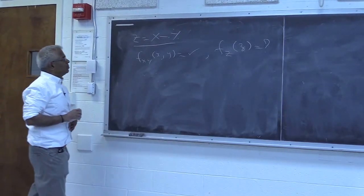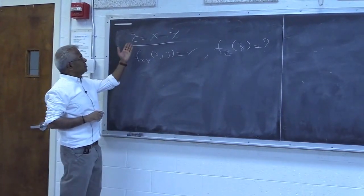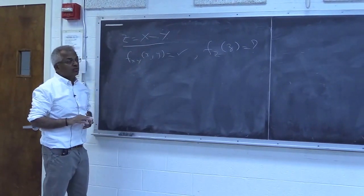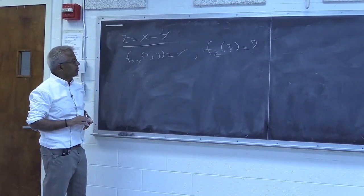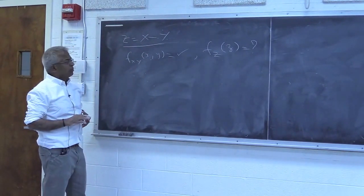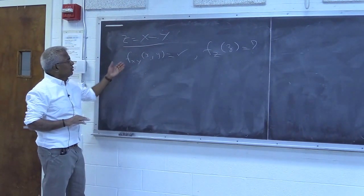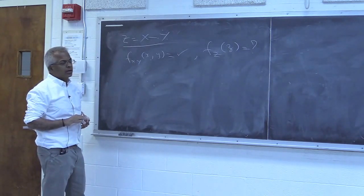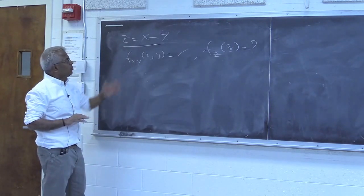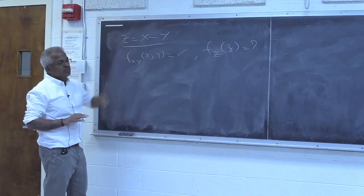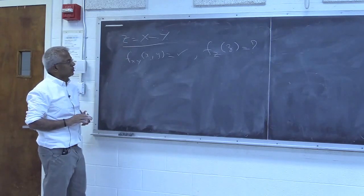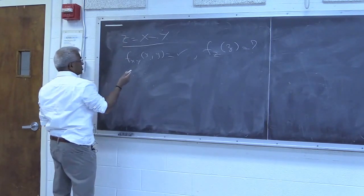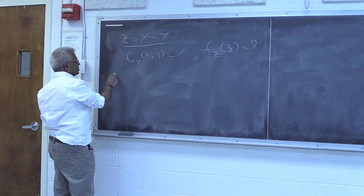Let's look at this problem. This is z = x minus y, the difference of two random variables. These are classic problems. You are given the joint density function of x and y, and we want the density function of z, where z is x minus y. The procedure is the same.